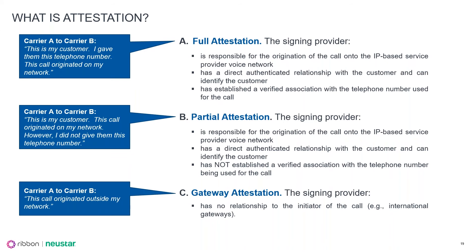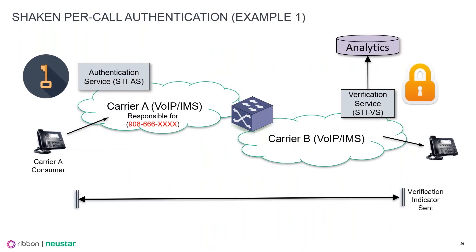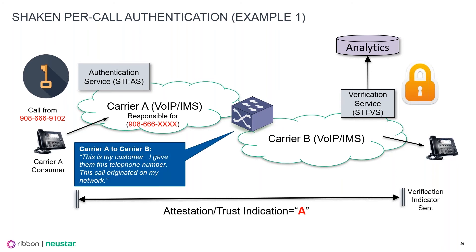Let's look at the most standard consumer-oriented SHAKEN per-call authentication. We have the originating carrier responsible for the 908-666-10,000 block here. They're going to make a phone call from a number that they've assigned to that consumer. It gets signed and carrier A tells carrier B: this is my customer, I gave them this telephone number, and the call originated on my network. Truly an attestation A — can't contest that.